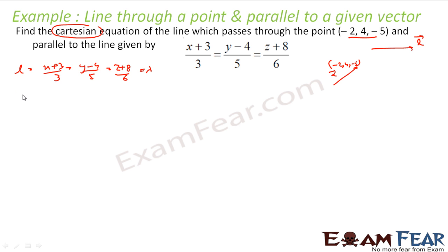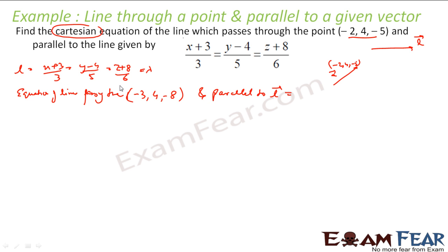This equation is nothing but the equation of a line passing through (−3, 4, −8) and parallel to some vector l, that is 3i + 5j + 6k. So this equation denotes a line passing through (−3, 4, −8) and parallel to 3i + 5j + 6k. When I have (x+3)/3 = (y−4)/5 = (z+8)/6, this is the equation of a line that passes through (−3, 4, −8) and is parallel to 3i + 5j + 6k. Is that clear?